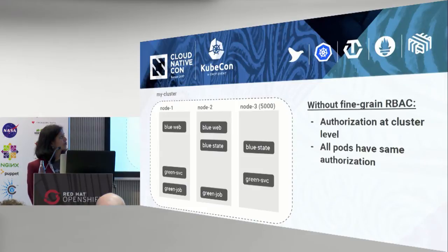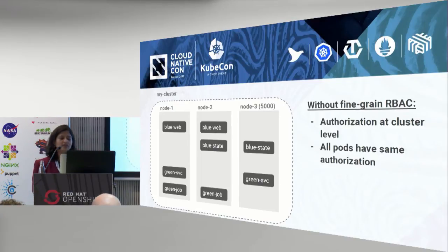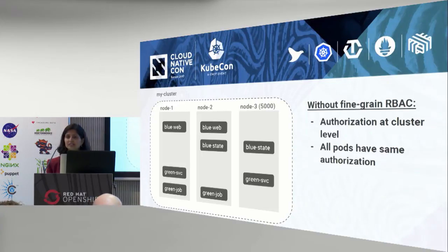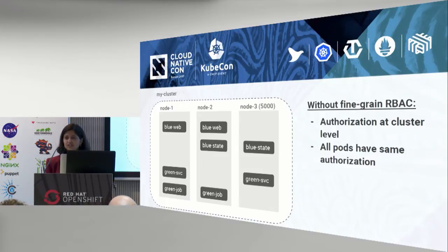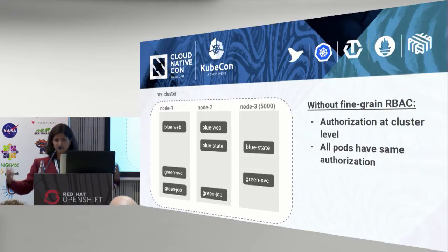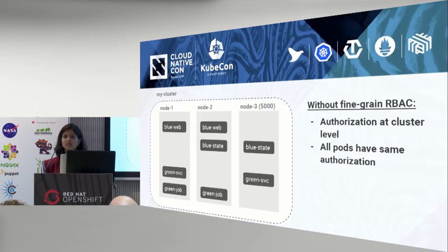Before fine-grained RBAC, you have a three-node or 5,000-node cluster with multiple pods and multiple workloads that belong to different teams. But there isn't a good way through the Kubernetes API to set up authorization — authorization is by default at the cluster level and all pods have the same authorization. We did have a mechanism called ABAC, but that is based on a static local file, whereas RBAC is truly dynamic and is through the Kubernetes API.